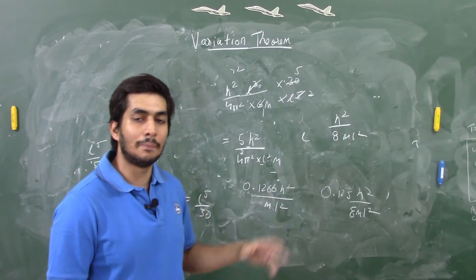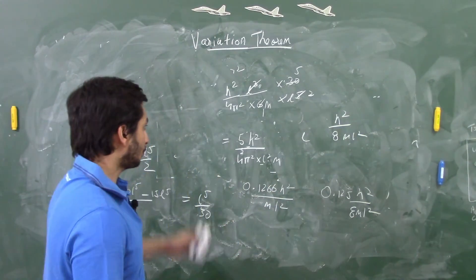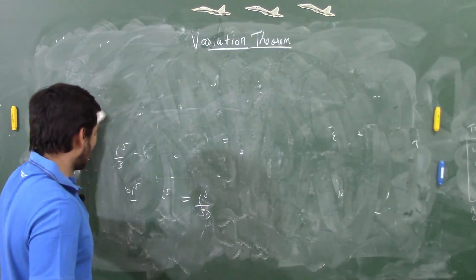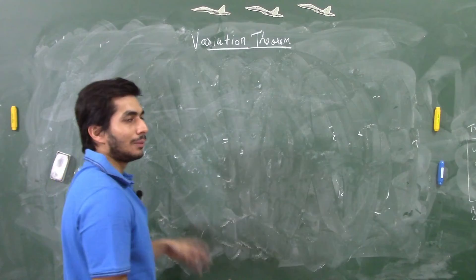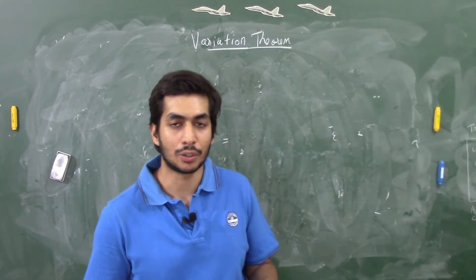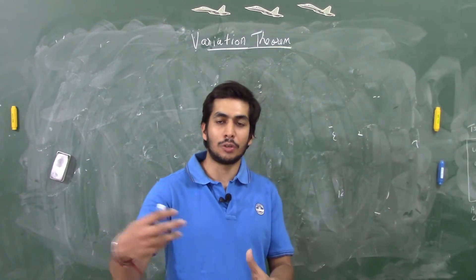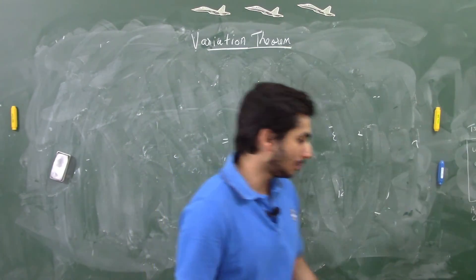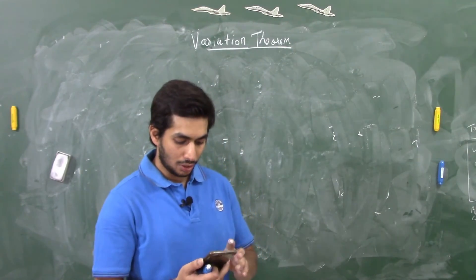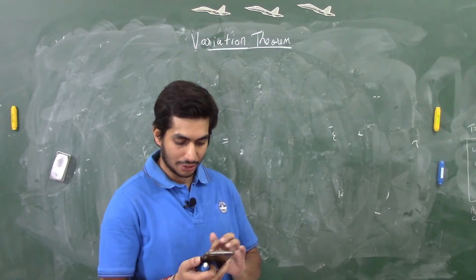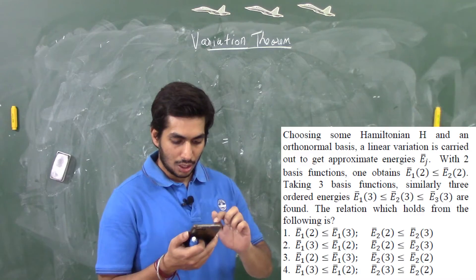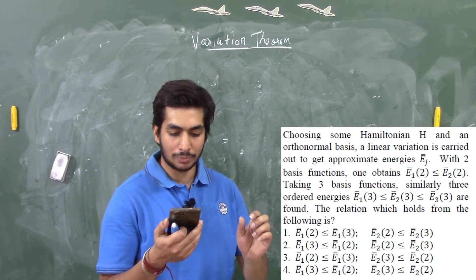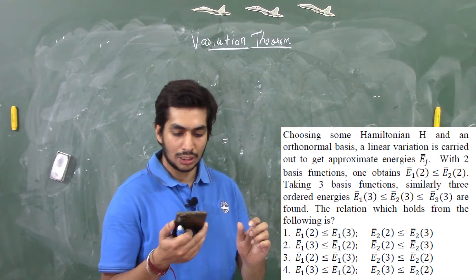This type of calculation can appear in the CSIR NET exam. I've also written down questions based on the secular determinant, which I've solved in detail on Unacademy — the link is in the description. Most questions in the CSIR NET exam on variation theorem are theoretical rather than calculation-based. Let me read out some questions: the first is the worked example we just did, and then there's the question visible on screen now.